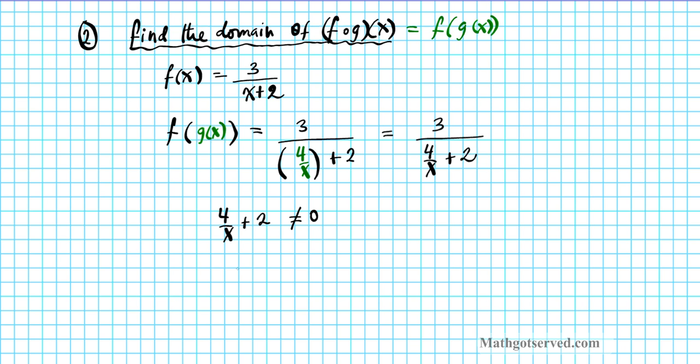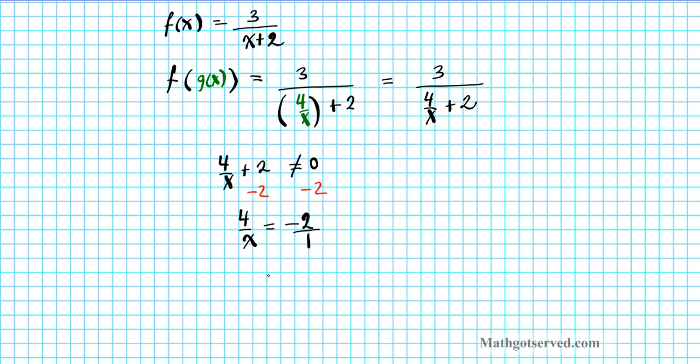Here we're going to subtract 2 from both sides. You have 4 over x equals negative 2. And then we're going to set this over 1, so we have two fractions. If you cross multiply or multiply both sides by x, you're going to end up with negative 2x equals 4. Divide both sides by negative 2, and your final answer is x equals negative 2.